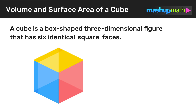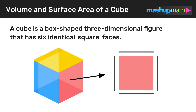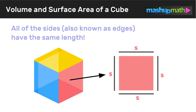Before we learn how to find volume and surface area of cubes, we need to know the key properties of cubes. A cube is a box-shaped three-dimensional figure that has six identical square faces. The key word here is square — each face is a four-sided figure with four right angles and four sides that all have the same length. So in a cube, all of the sides, also known as edges, have the same length. We'll call that length s.